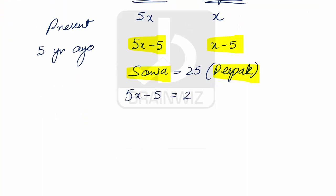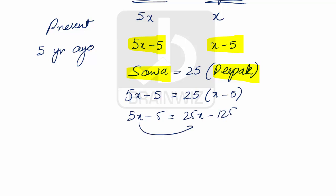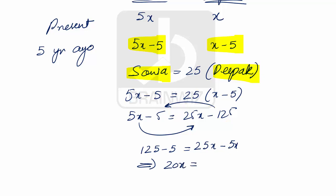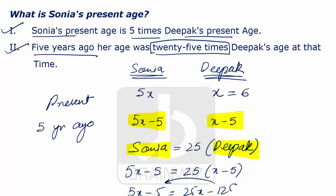So 5x minus 5 equals 25 times (x minus 5). Opening the bracket: 5x minus 5 equals 25x minus 125. Rearranging: 125 minus 5 equals 25x minus 5x, which gives 20x equals 120, so x equals 6 years. We got the value of x as 6 and Sonia is 5 times 6, that is 30 years. With the help of this we can say that statement 1 and statement 2 both are necessary to answer the question.